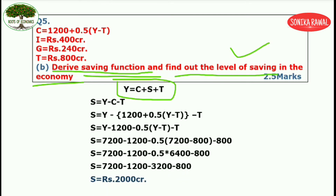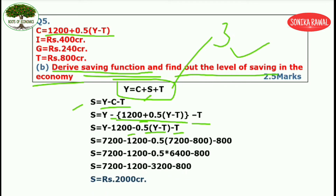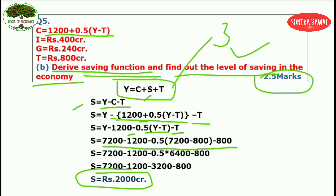S equals Y minus C minus T. Put the consumption value here and subtract taxes as well. When you open the bracket, many students make a mistake: the minus sign multiplied with the plus inside the bracket becomes minus. You separately subtract taxes too. Put all values, open brackets, multiply, then do plus and minus. The final answer for saving is 2000 crores. You have secured another 2.5 marks.